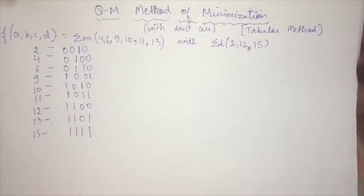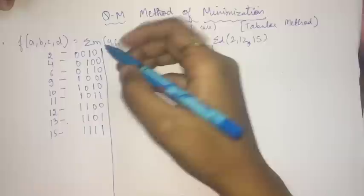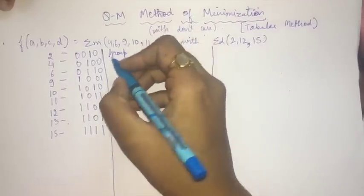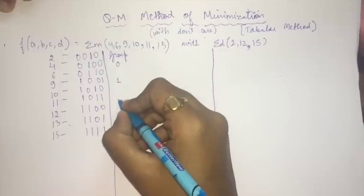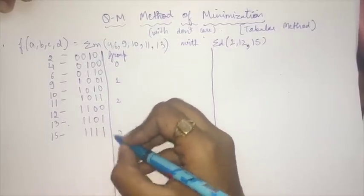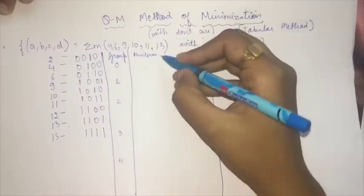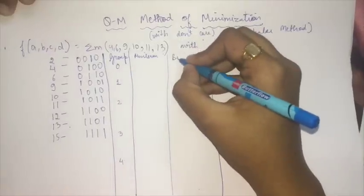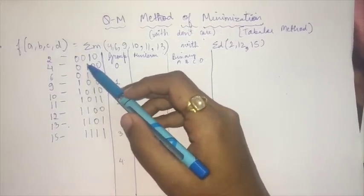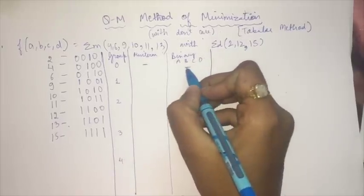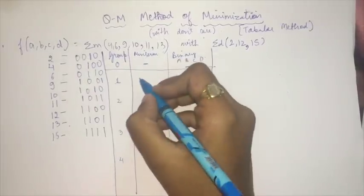The first step in the QM method is to divide all these numbers into groups based on the number of ones in their binary representation. We can have zero, one, two, three, or four ones. This table has a column for the minterm and a column for the binary (a, b, c, d). The minterm having zero ones — we don't have any, so it's null. Minterms with exactly one '1' are m2 and m4.